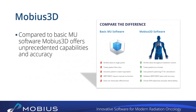If you look at Mobius 3D compared to basic MU software — your RadCalcs and so forth — it really does offer unprecedented capabilities and accuracy. Basic MU software only verifies dose at single points; Mobius 3D verifies dose all the way through the treatment volume in 3D. Your basic MU software treats the patient like a box — it doesn't know anything about contours. We actually import the patient's planning CT and treat them as a human, doing all calculations throughout their volume taking into account all of the different contours.